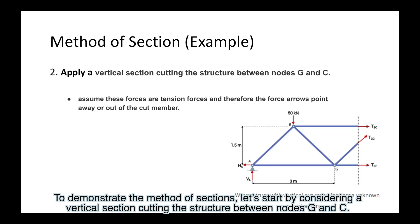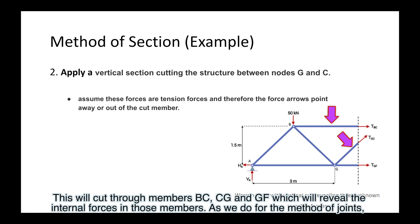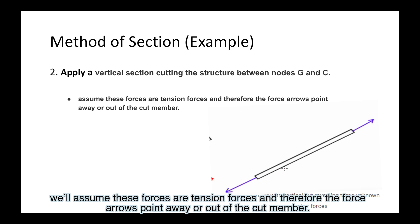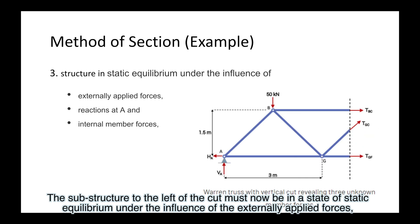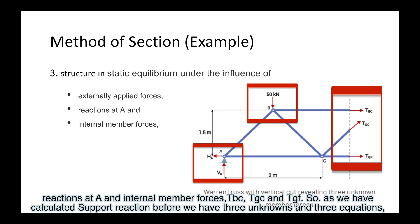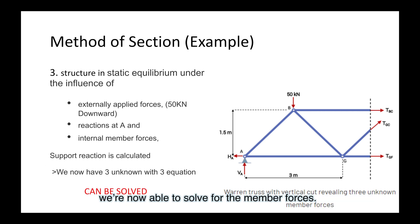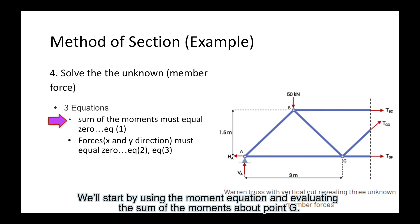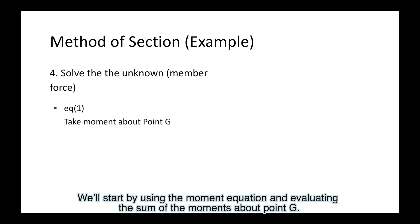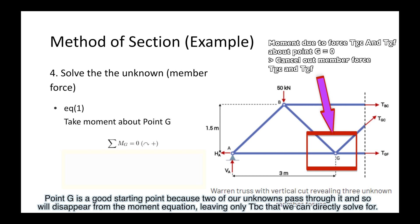To demonstrate the method of sections, let's start by considering a vertical section cutting the structure between nodes G and C. This will cut through members BC, CG, and GF, which will reveal the internal forces in those members. As we do for the method of joints, we'll assume these forces are tension forces, and therefore the force arrows point away or out of the cut member. The substructure to the left of the cut must now be in a state of static equilibrium under the influence of the externally applied forces, reactions at A, and internal member forces TBC, TGC, and TGF. So as we have calculated support reactions before, we have three unknowns and three equations. We're now able to solve for the member forces. We'll start by using the moment equation and evaluating the sum of the moments about point G. Point G is a good starting point because two of our unknowns pass through it and so will disappear from the moment equation, leaving only TBC that we can directly solve for.